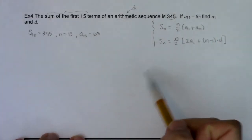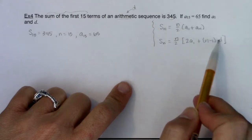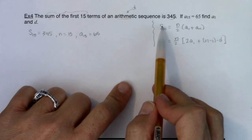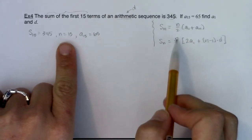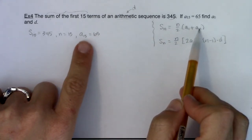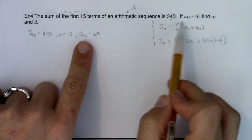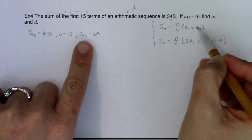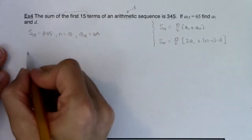Let's start to think about what we have and what we need to get. So I know I need to get a sub 1 and I need to get d. I know s sub 15, that's 345, so I could put 345 into either of these equations. I know n, that's 15. I know a sub 15, that's 65, so what I'm missing is a sub 1 in both of these equations and d. So let me start with the first equation because I know s sub 15, I know n, and I know a sub 15, so I could solve for a sub 1 that way.